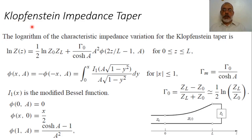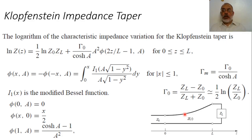The answer to this question comes from using a tapered section based on a multi-section Chebyshev polynomial. If you remember when we studied the multi-section Chebyshev polynomial, we said that the reflection coefficient will have a constant amplitude. So based on the multi-section Chebyshev polynomial, and letting the length of sections tend to zero, we can obtain the taper distribution corresponding to this Chebyshev multi-section matching network.